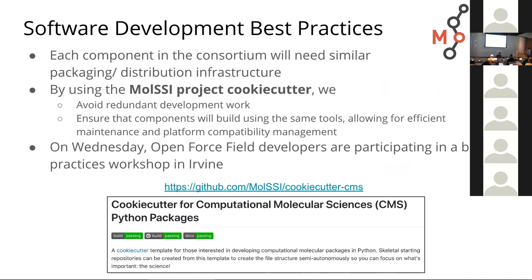To make sure we have best practices — integration tests running for every component, documentation building for every component — we don't want to go to every component maker separately and implement things differently. We're working with an organization called MolSSI, who want to improve the quality of scientific software. They provide the MolSSI Project Cookie Cutter: a way to download a generic repository that already has the files needed to spin up ReadTheDocs and Travis. There are a few steps to register with external services, but for the most part the work is done. The software scientists at MolSSI know how to interface with these systems, so if a developer leaves or has a problem they can't solve, MolSSI can help keep packages up to spec.